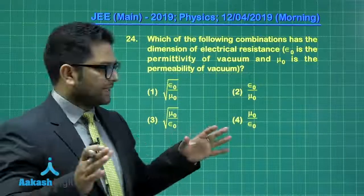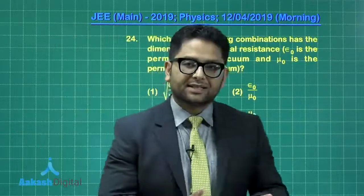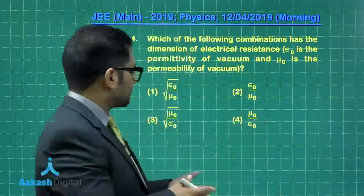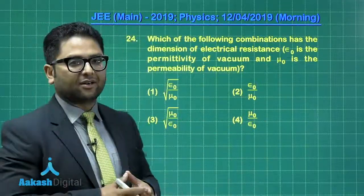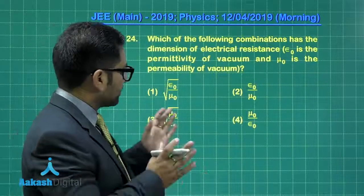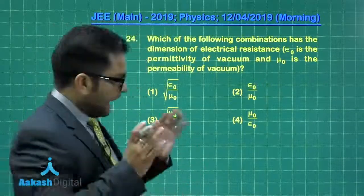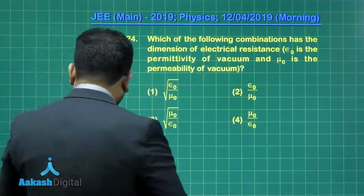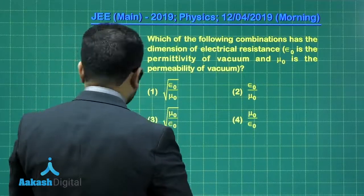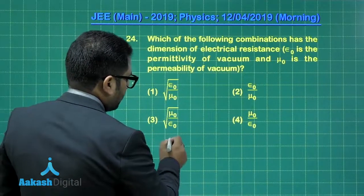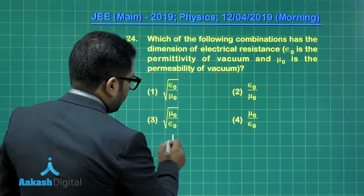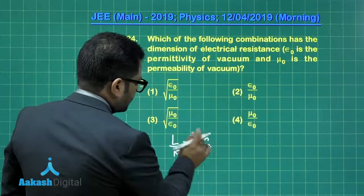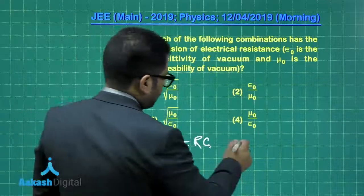Recall that τ = RC and τ = L/R, both being time constants. From these, resistance R equals √(L/C). An aspirant should remember that R = √(μ₀/ε₀). If not, here's how to derive it: since L/R = RC, we get R² = L/C, so R = √(L/C).